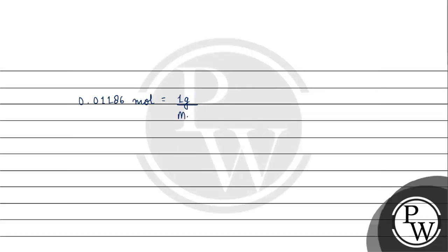The number of moles equals mass divided by molar mass. The mass of M₂CO₃ given is 1 gram. So the molar mass will be 1 divided by 0.01186.